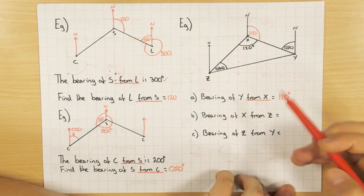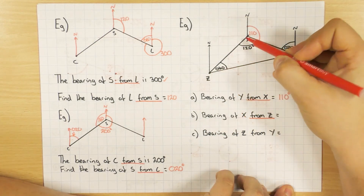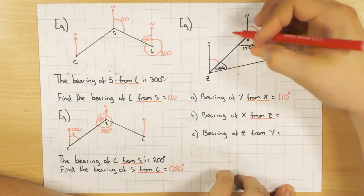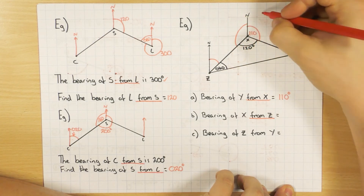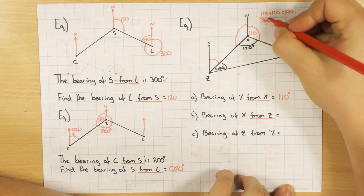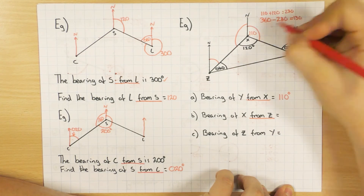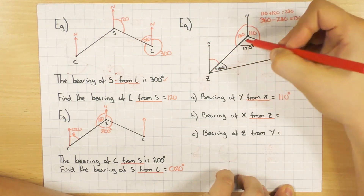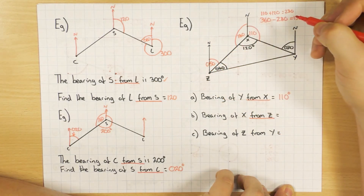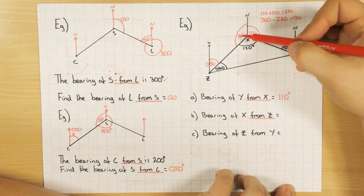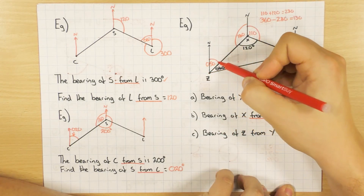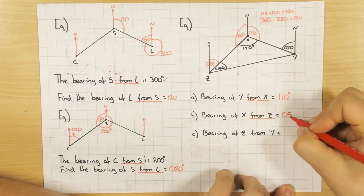Part B: bearing of X from Z — from Z, north clockwise to X. The triangle has interior angles: 110 plus 120 equals 230, so the third angle is 360 minus 230 equals 130. Using the interior rule, 130 and the bearing add to 180, giving 50. So the bearing of X from Z is 050 degrees.